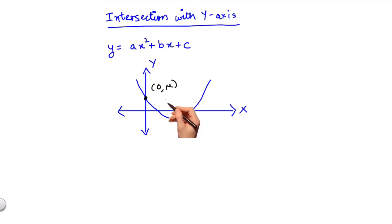Now putting these coordinates into the equation of the function, we get mu equals a times zero square plus b times zero plus c, which is nothing but c.